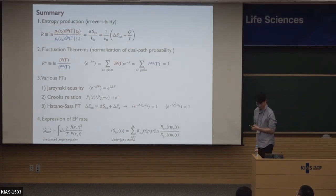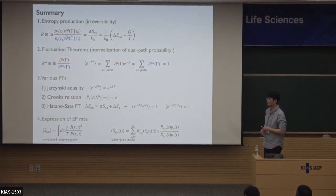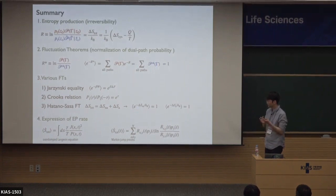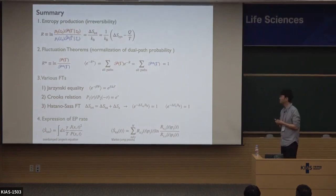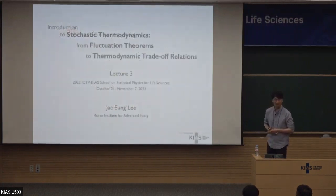This is a summary of lecture two. I talked about the Hatano-Sasa entropy production — entropy can be divided into two parts, each satisfying the fluctuation theorem separately. This is the entropy production rate expression for overdamped Langevin dynamics, and this is the expression for the Markov jump process. I will use these two expressions later. Now let's turn to lecture three.